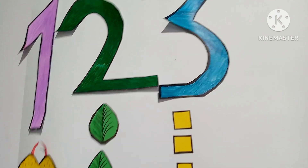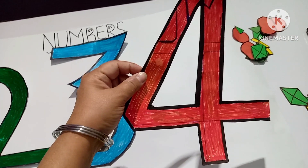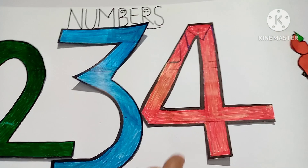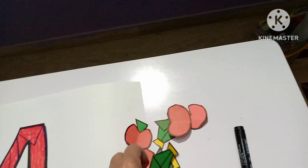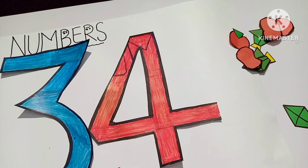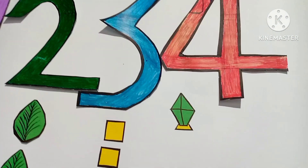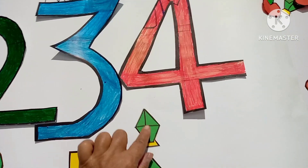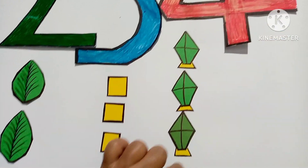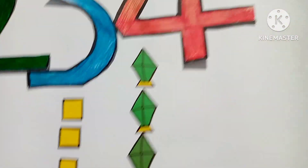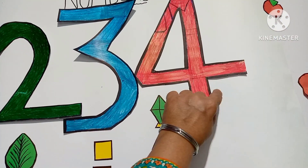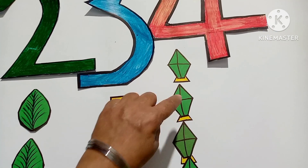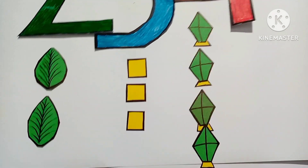One, two, three. Three squares. This is number four. There are four kites — one, two, three, and four. Let's count: number four — one, two, three, four. Four kites.